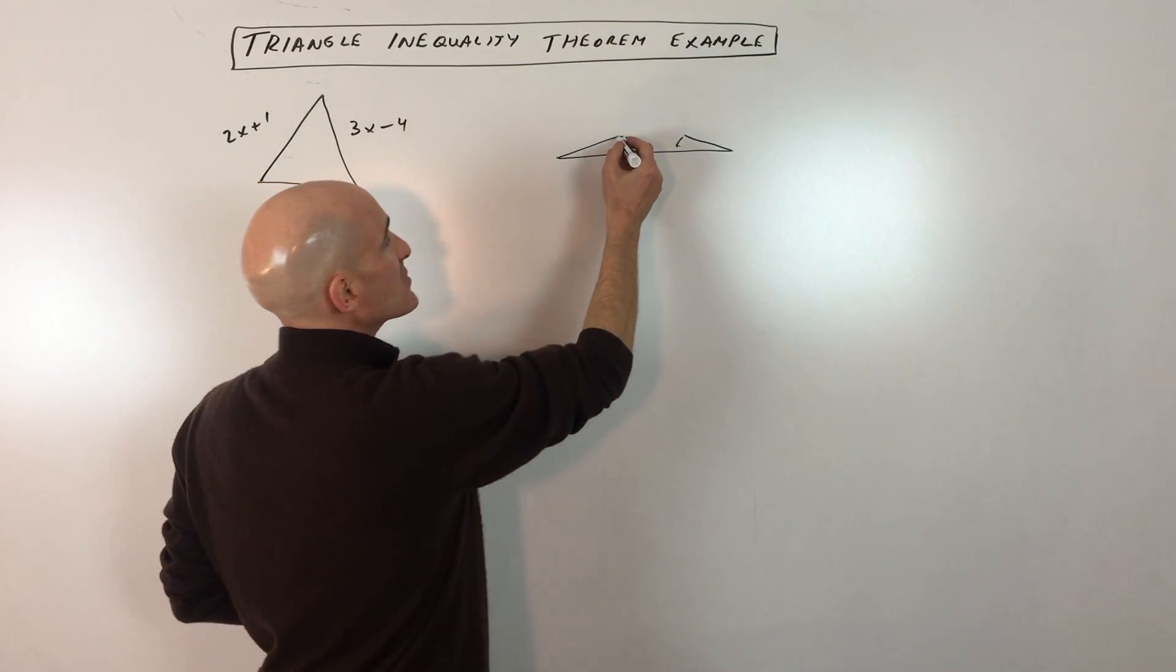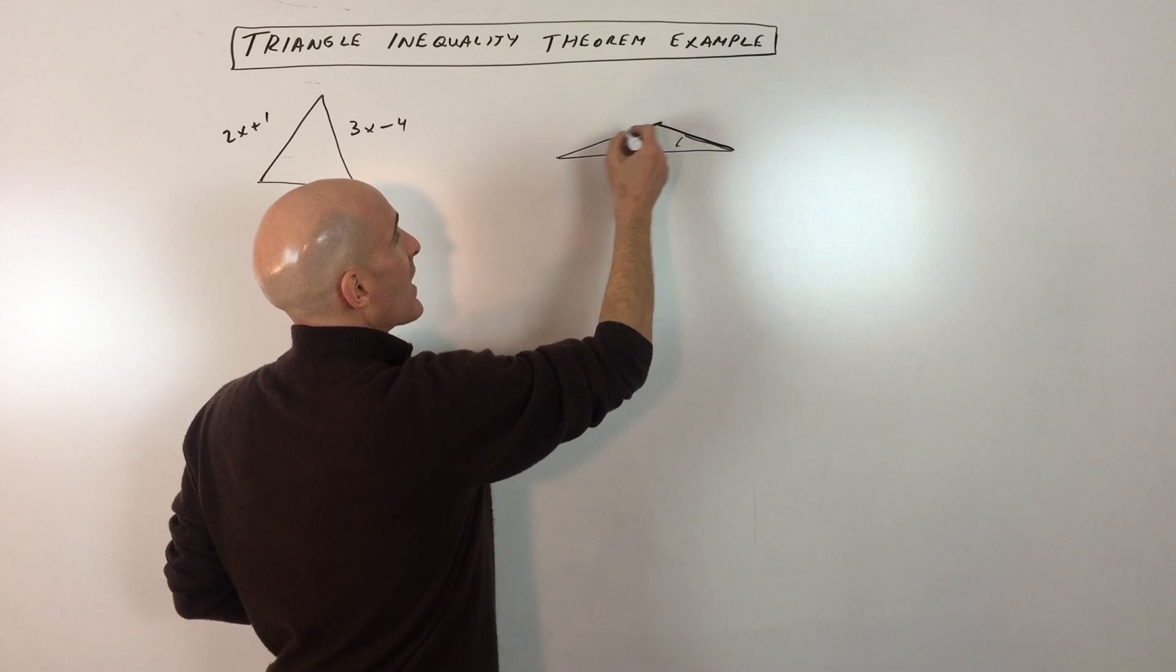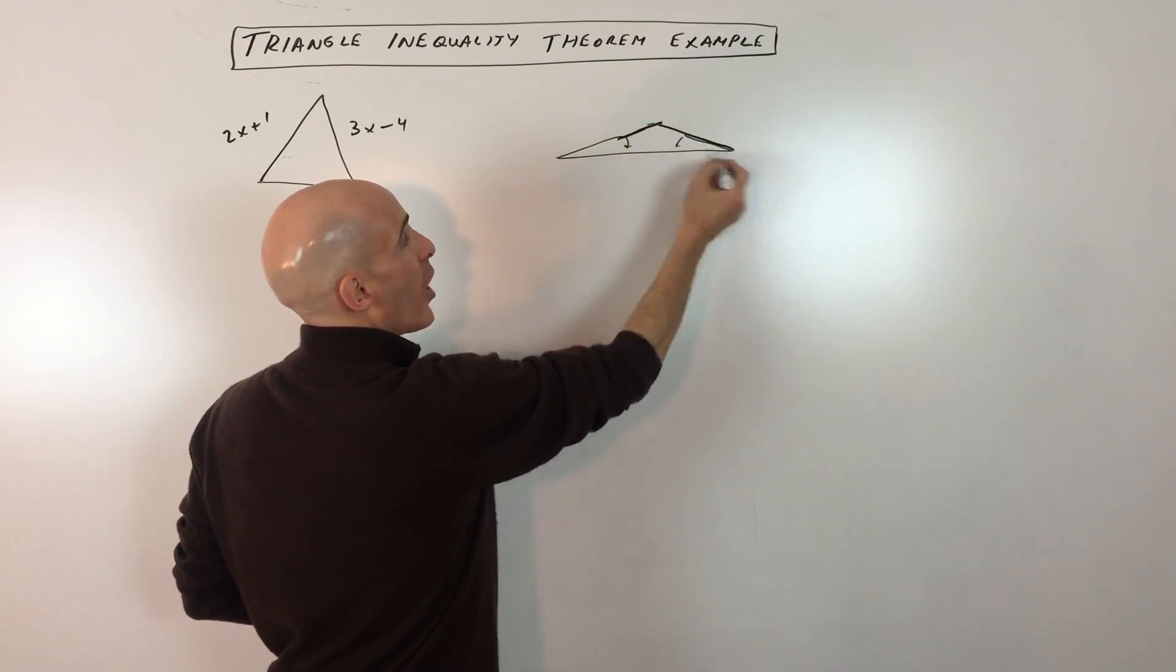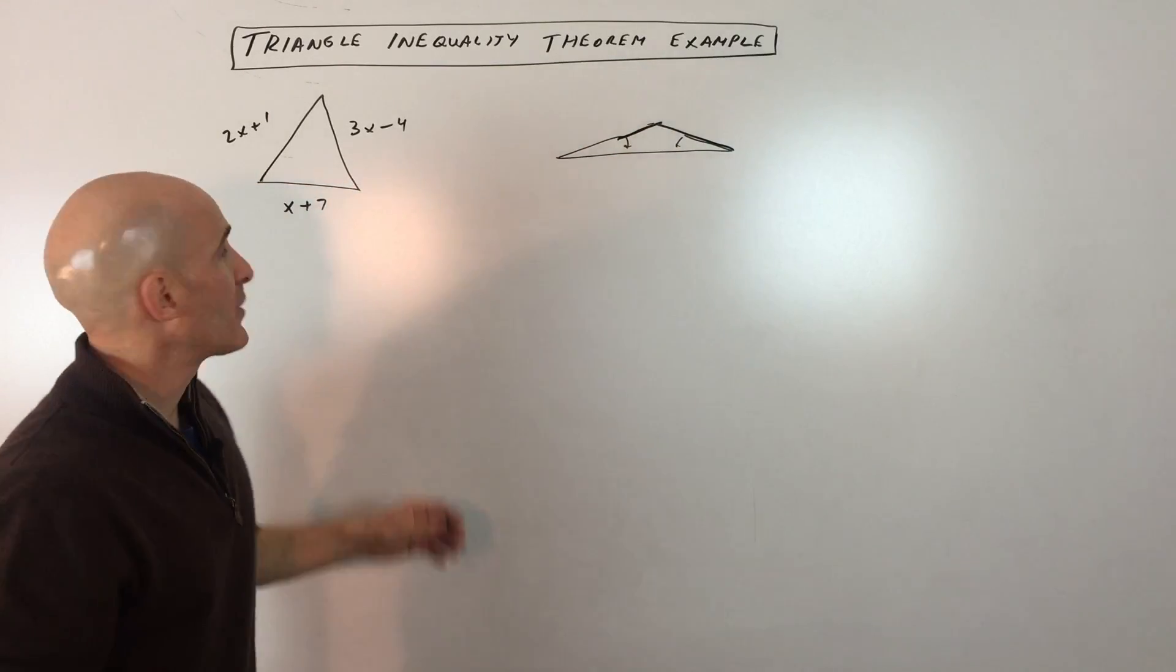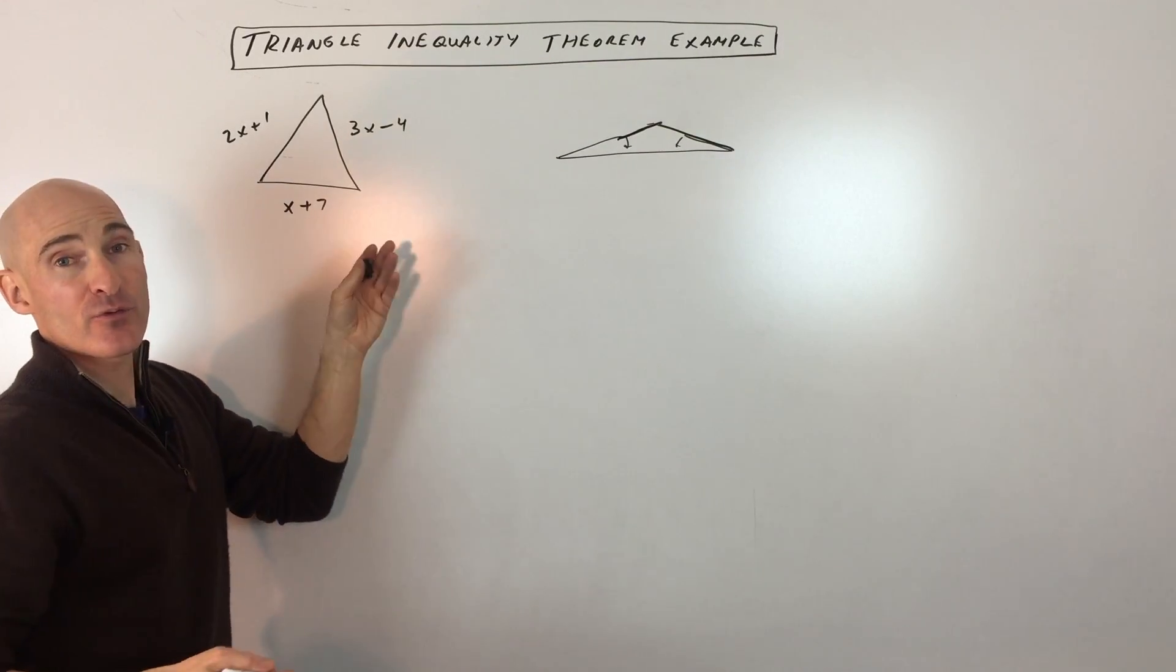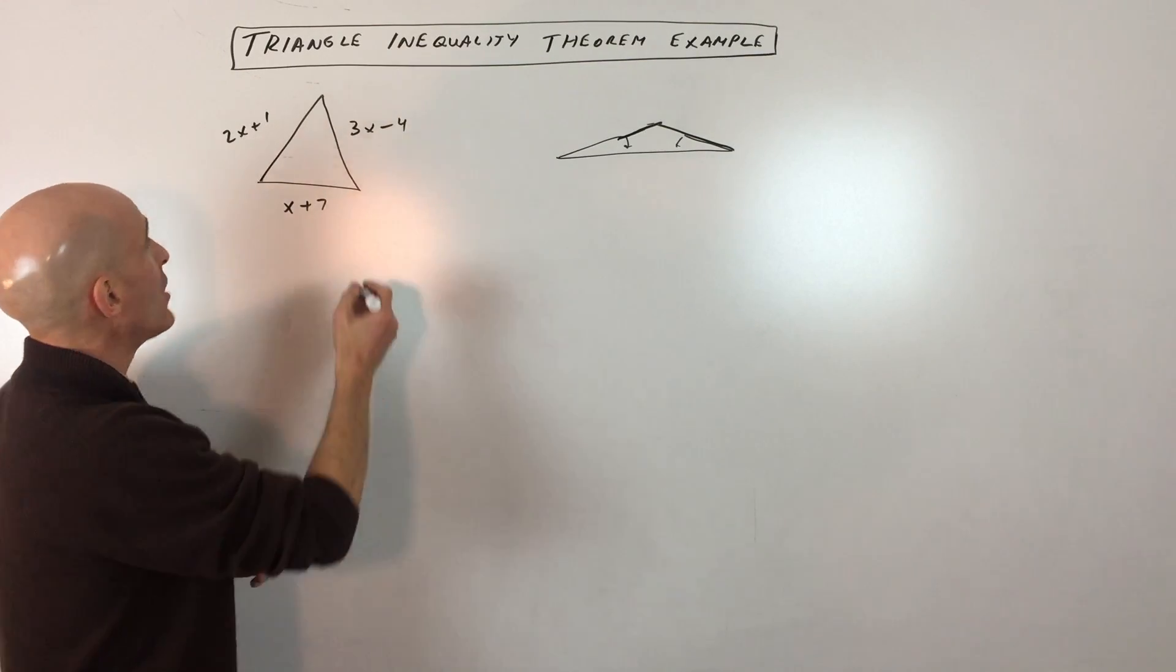So the only way you're going to have a triangle is if these two sides, when you add them up, are longer than the third side. So using that, we're going to make three inequalities and solve them.